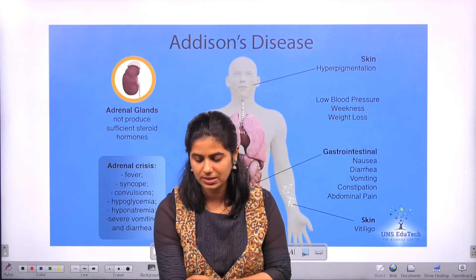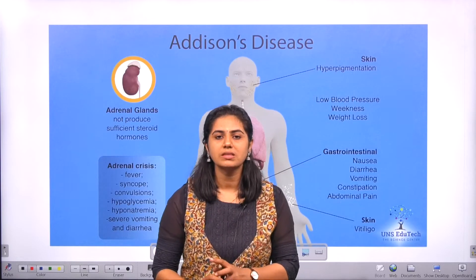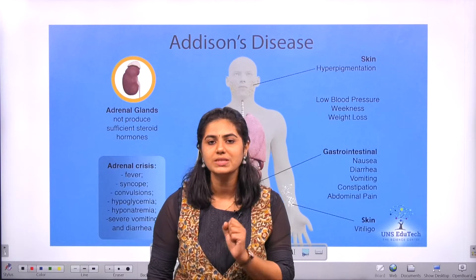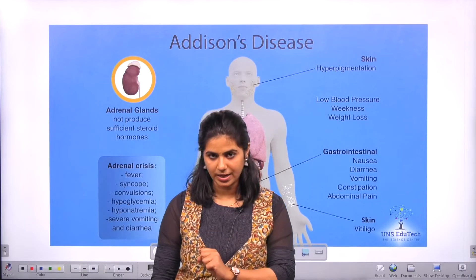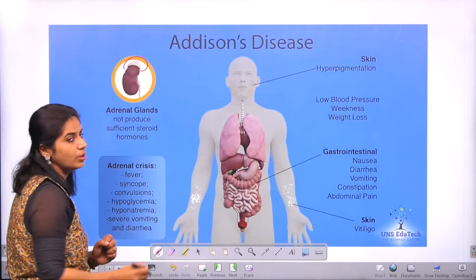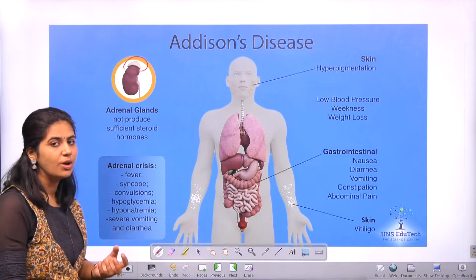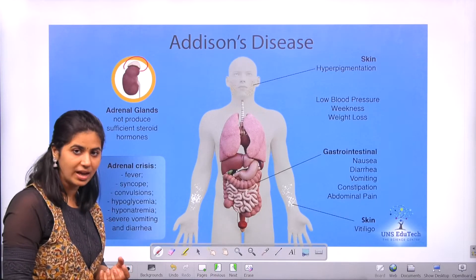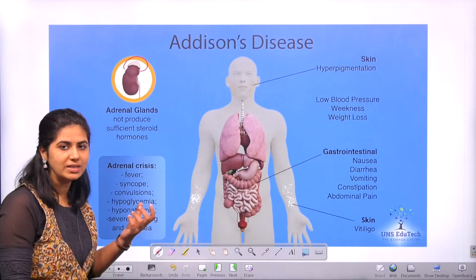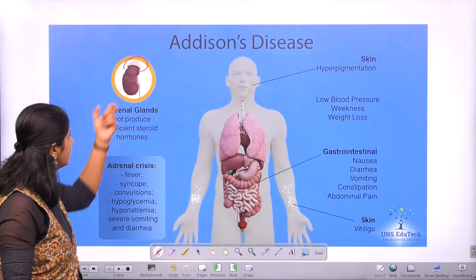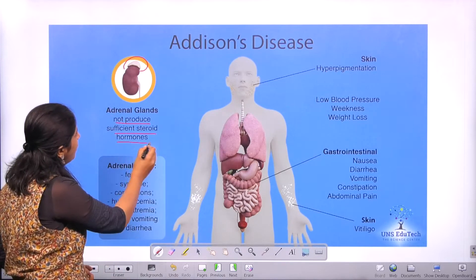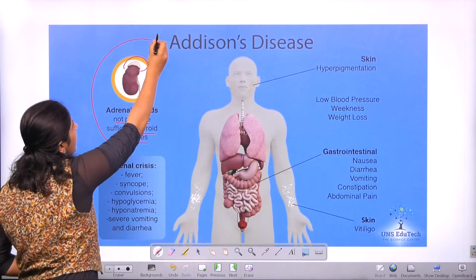First, let's discuss what is Addison's disease. Addison's disease is the insufficient production of steroids from the adrenal gland. The adrenal gland is situated above our kidney. It is the gland that also produces adrenaline — the fight-or-flight hormone is produced from the medulla of the adrenal gland. When the adrenal gland does not produce a sufficient amount of steroid hormone, it results in Addison's disease.